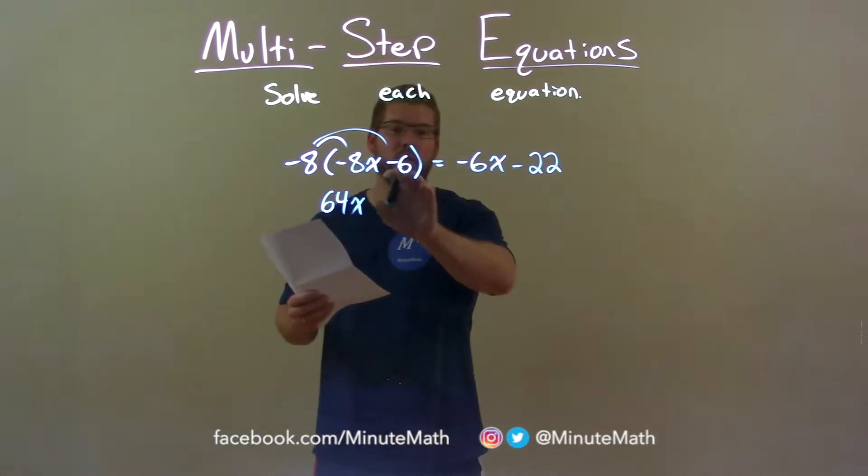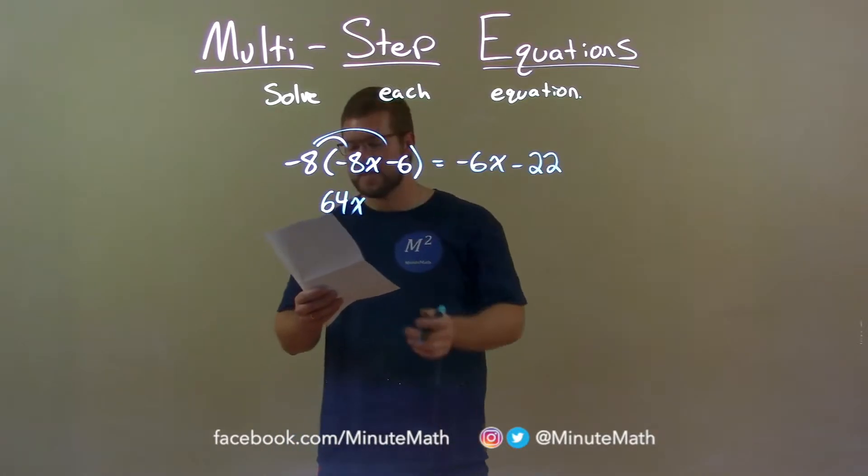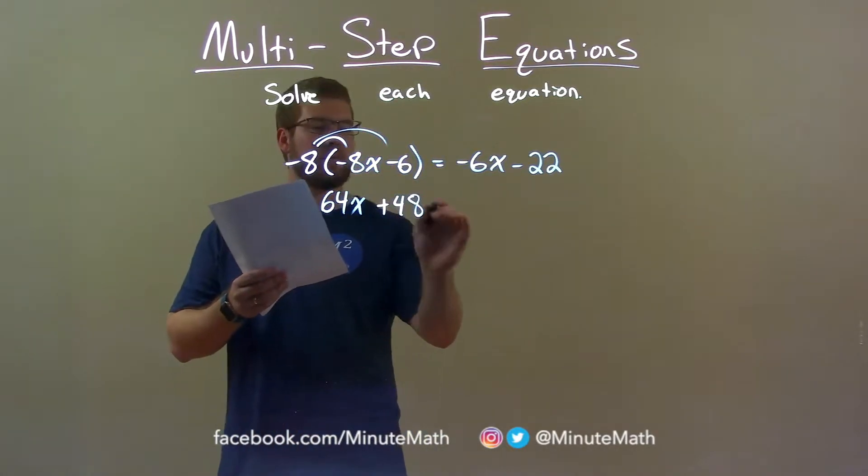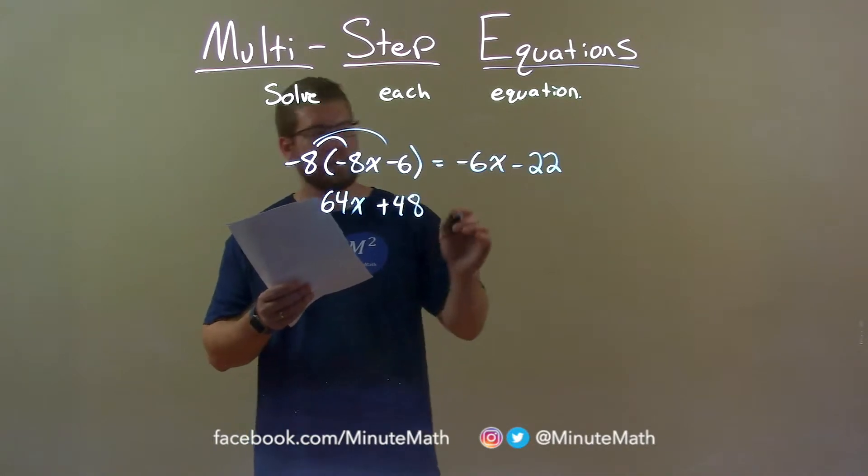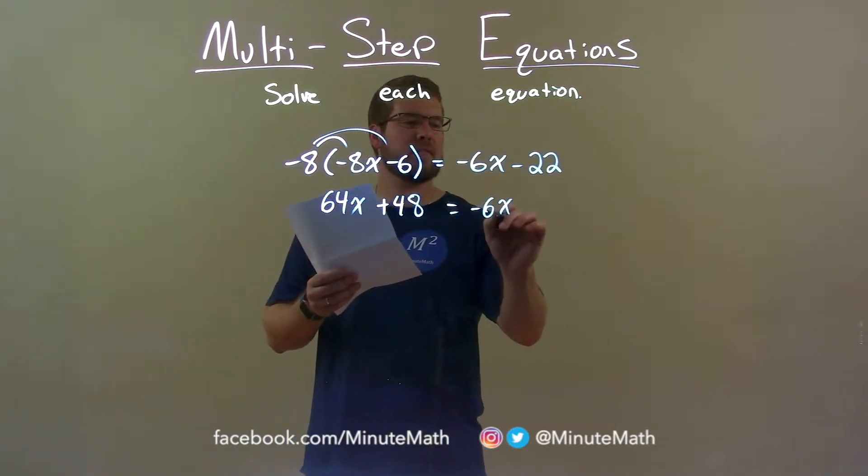Negative 8 times, well that's really a negative 6, minus 6. That's going to be a positive 48. Remember, negative times a negative is a positive and that equals negative 6x minus 22.